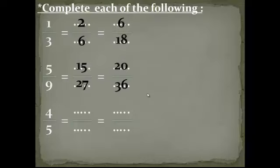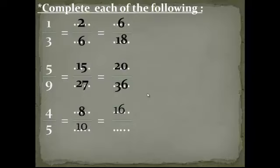The last question: 4 over 5 equals space over space. I will choose multiply by 2: 4 by 2 equals 8, 5 by 2 equals 10. I will also choose multiply by 4: 4 by 4 equals 16, 5 by 4 equals 20.